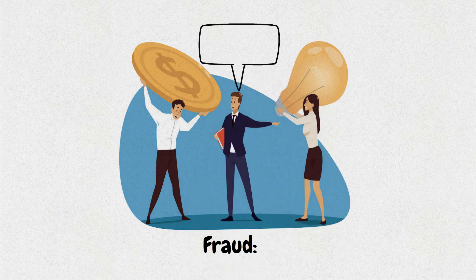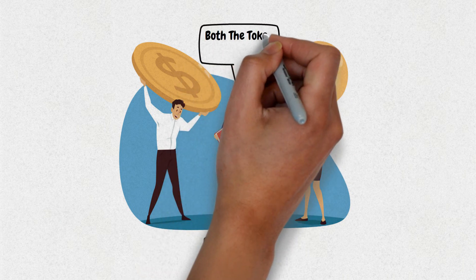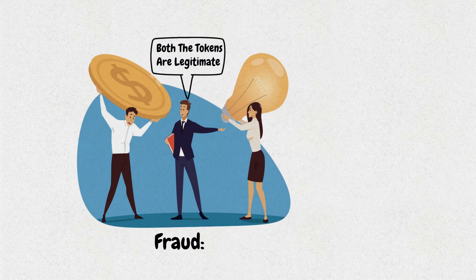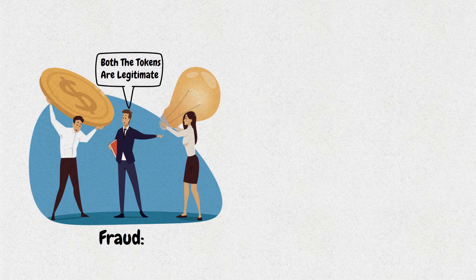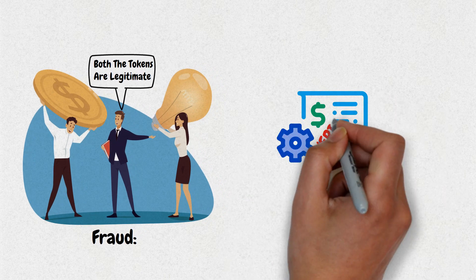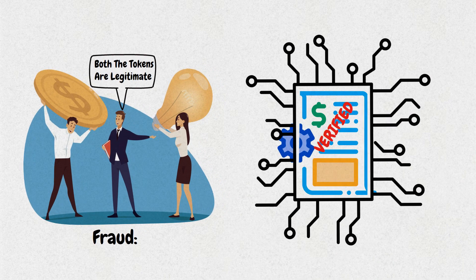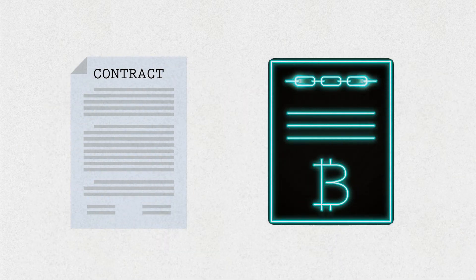Fraud: the intermediary must verify that both tokens are legitimate before making a swap. With smart contracts, the tokens can be verified on the blockchain, and with digital signatures it can be confirmed immediately whether the parties are eligible to spend their tokens.